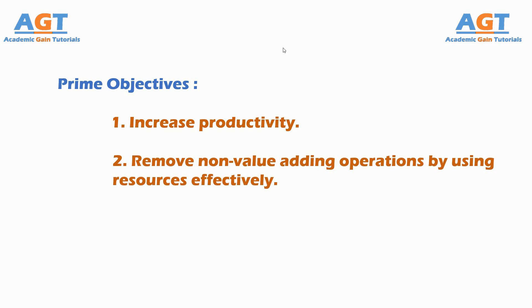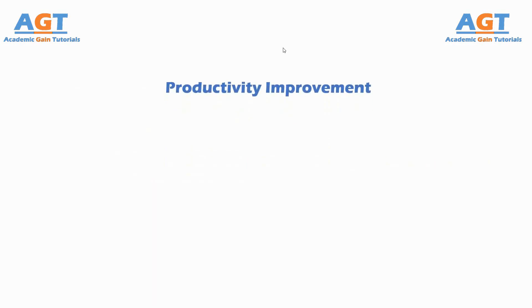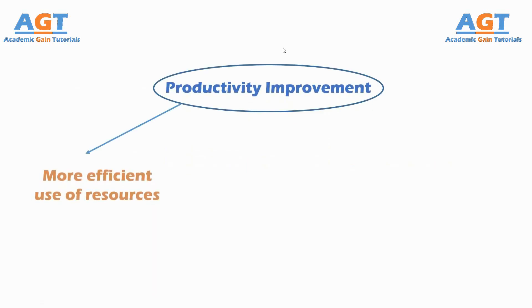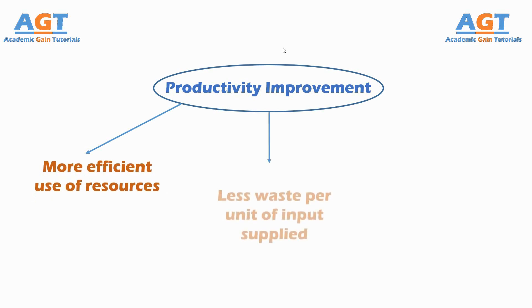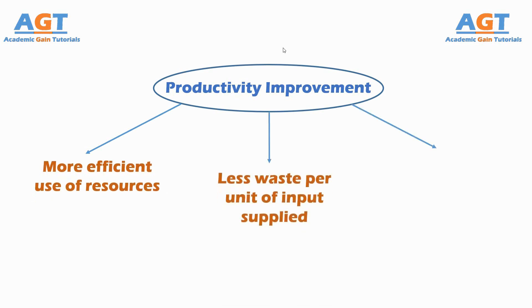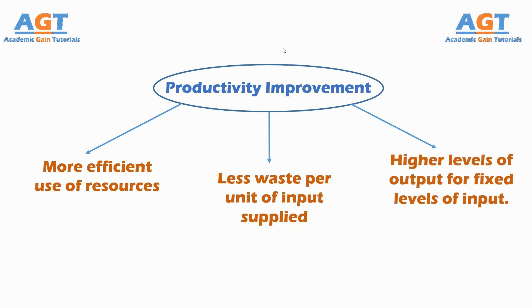So, essentially, an industrial engineer is engaged in the design of a system, and his function is primarily that of management. If an industrial engineer had to focus on only one concept to describe his field of interest and objective, it would have to be productivity improvement, which implies a more efficient use of resources, less waste per unit of input supplied, higher levels of output for the fixed levels of input supplied, and so on.